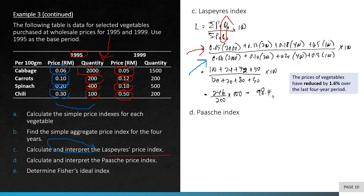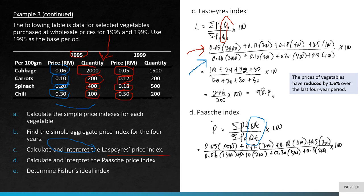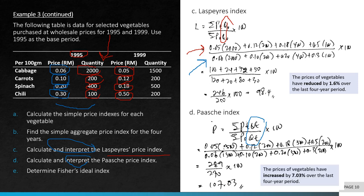For part D, the Paasche index uses current period quantities (QT) as weights. The formula is: sum of (PT × QT) over sum of (PO × QT) times 100. Working through the calculation gives 107.03. Since 107.03 is above 100, the prices of vegetables have increased by 7.03% over the last four-year period.